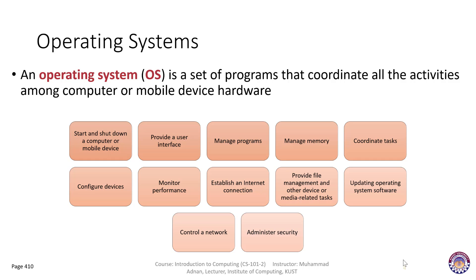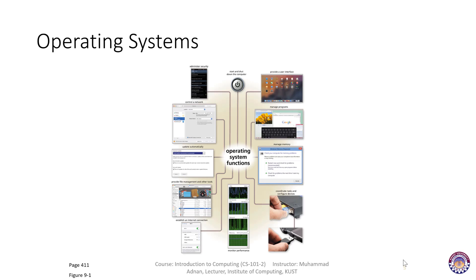Once again, the definition: an operating system is a set of programs that coordinates all the activities among the computer system — managing all devices like RAM, hard disk, modem, network card, and input/output devices. It produces coordination among all computer devices, including externally-used devices connected to the system unit. When you start your computer, the operating system allows you to start and shut down, and it manages all of this automatically.